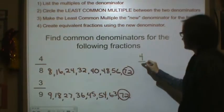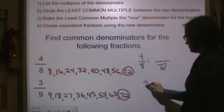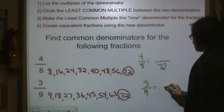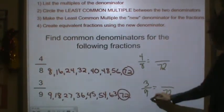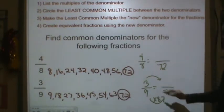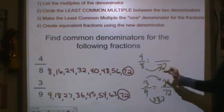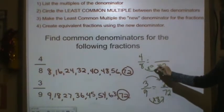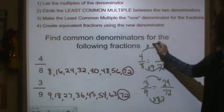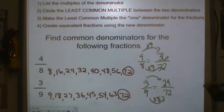So 4 eighths is equal to something 72nds. 3 ninths is equal to something 72nds. So 9 times 8 is 72. 3 times 8 is 24. 8 times 9 is 72. 4 times 9 is 36. So now we have a common denominator.